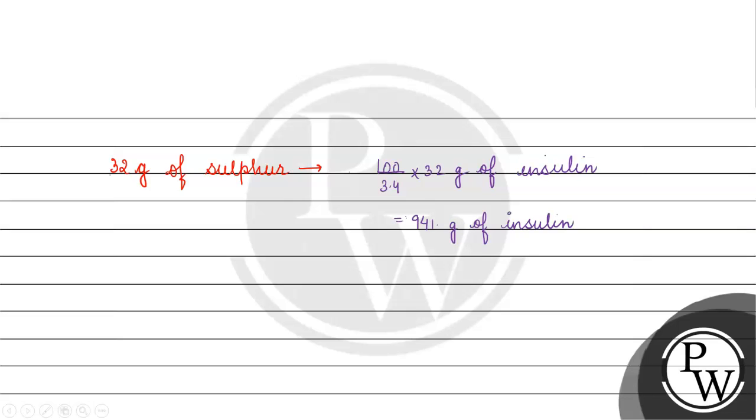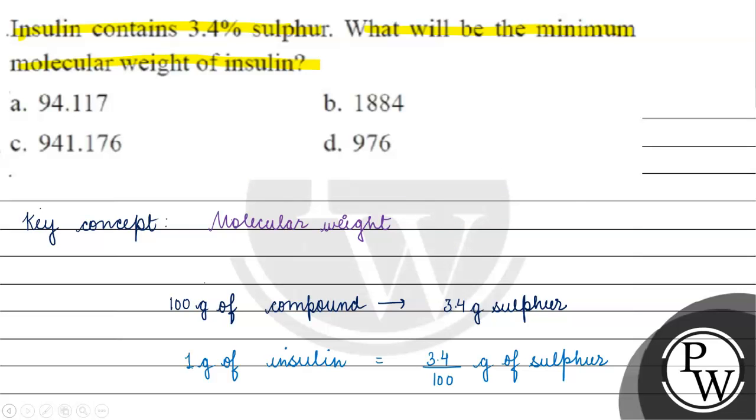We have 32 gram of sulfur. The minimum molecular weight of insulin will be equals to option C.